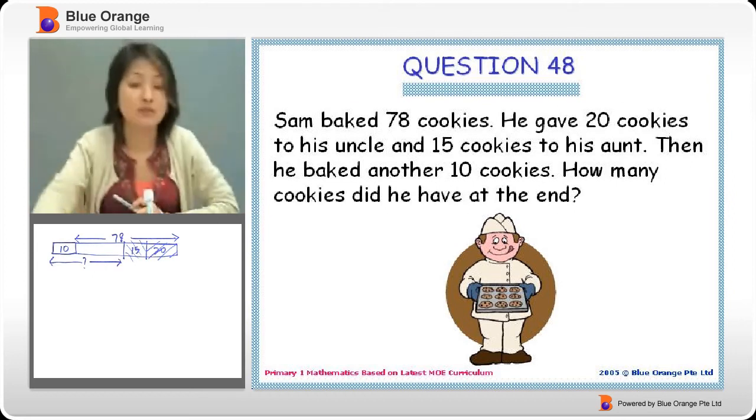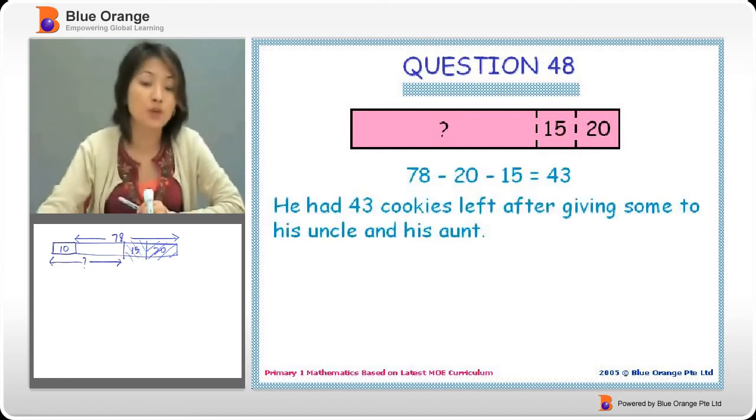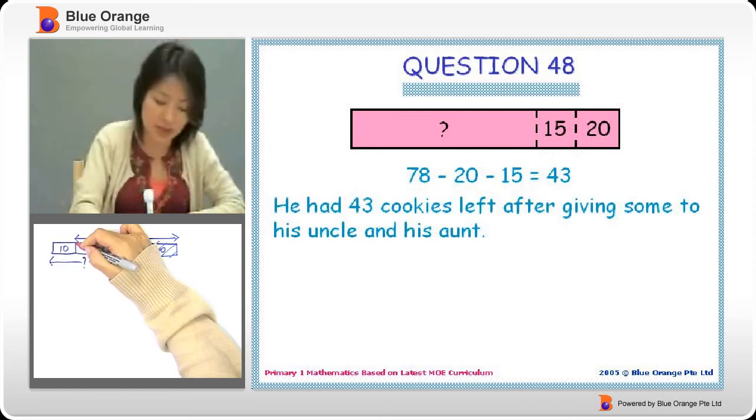Okay, so what do we do? He gave away 15 and 20. So what we do is we find out what is this part in red. What is this part? To find out what is this part, we just have to take 78.